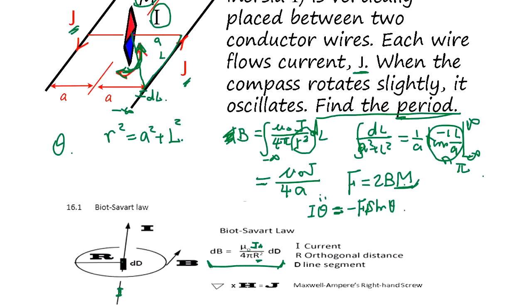Sine theta is approximately theta when theta is small. So we have the oscillation equation: I times theta double-dot plus 2BM theta equals zero.